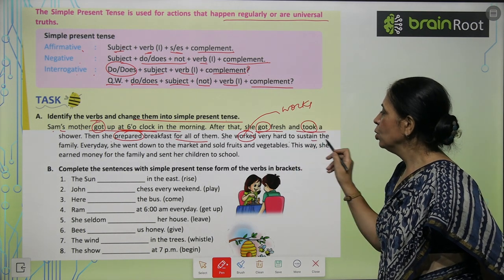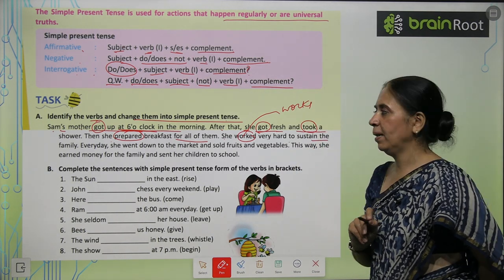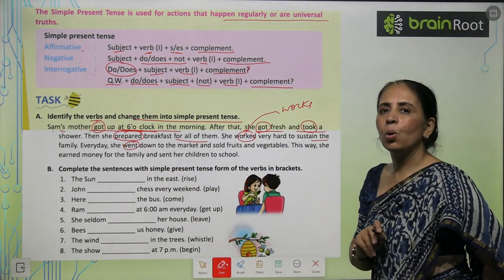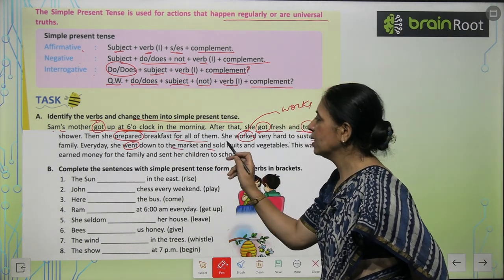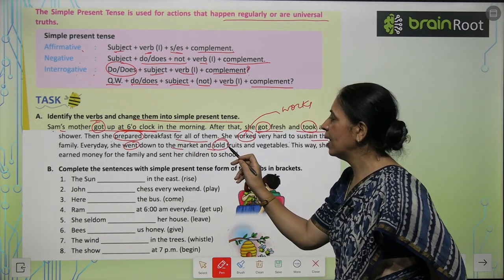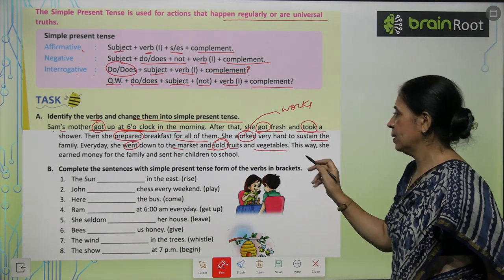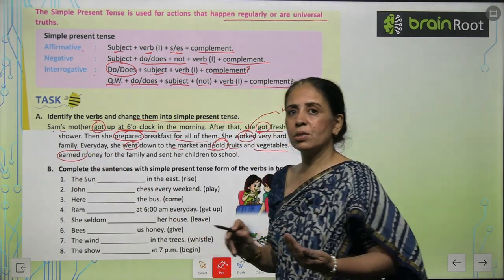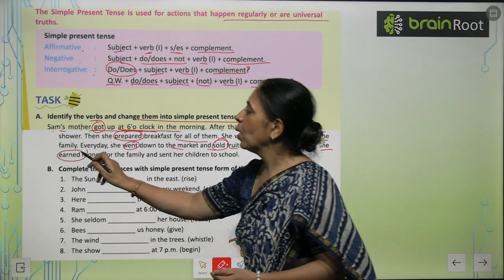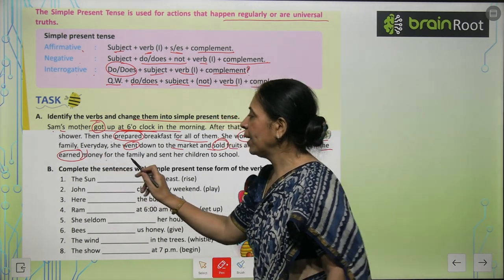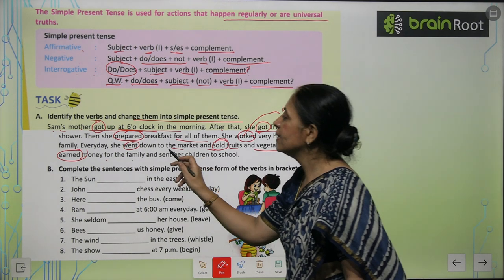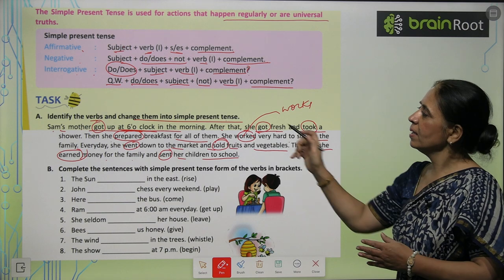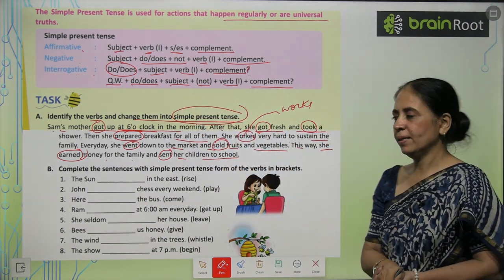So we will say: 'Sam's mother gets up at 6 o'clock in the morning. After that she gets fresh and takes a shower. Then she prepares breakfast for all of them. She works very hard to sustain the family. Every day she goes down to the market and sells fruits and vegetables. This way she earns money for the family and sends her children to school.' So the past tense has been converted to simple present tense.